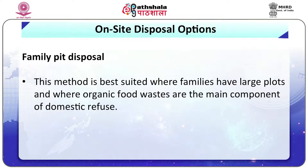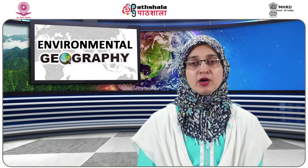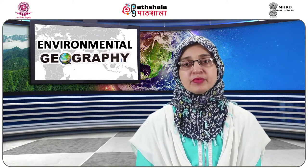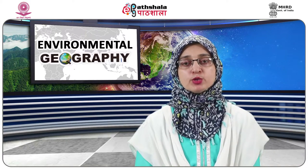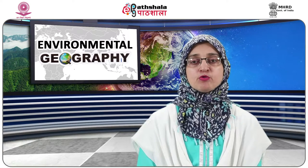Number two: family pit disposal. Family pits may provide a better long-term option where there is adequate space. This method is best suited where families have large plots and where organic food waste are the main component of domestic refuse. Number three: communal bins. Communal bins or containers are designed to collect waste where it will not be dispersed by wind or animals and where it can easily be removed for transportation and disposal. A popular solution is to provide oil drums cut in half, with the base perforated to allow liquid to pass out and to prevent their use for other purposes. A lid and handles can be provided if necessary.